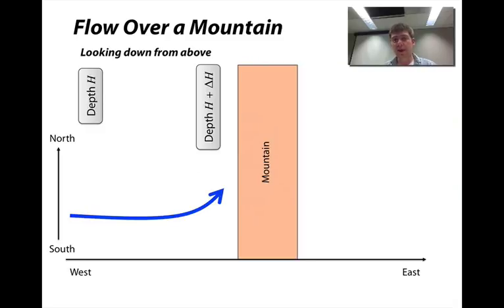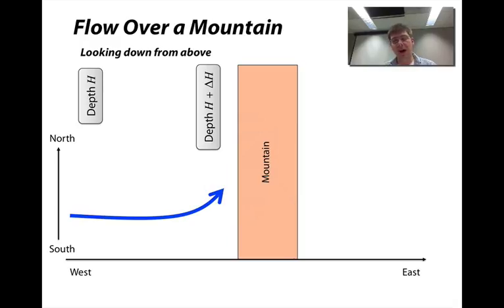If we look at this from above, here depicting the mountain in the north-south direction and the flow from overhead, we will see that as the flow approaches the mountain to a depth that is larger than the initial depth, the flow must turn northwards in order to compensate for the increase in the column height.